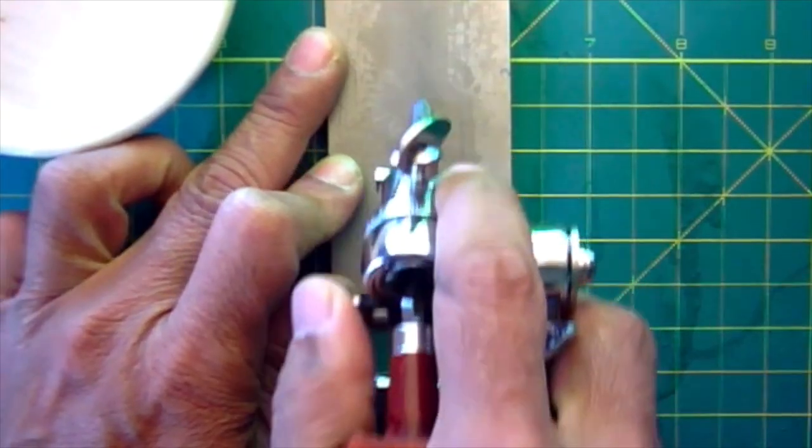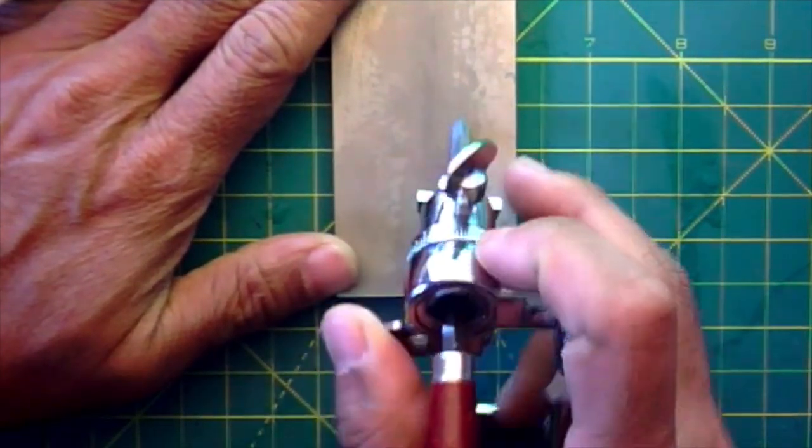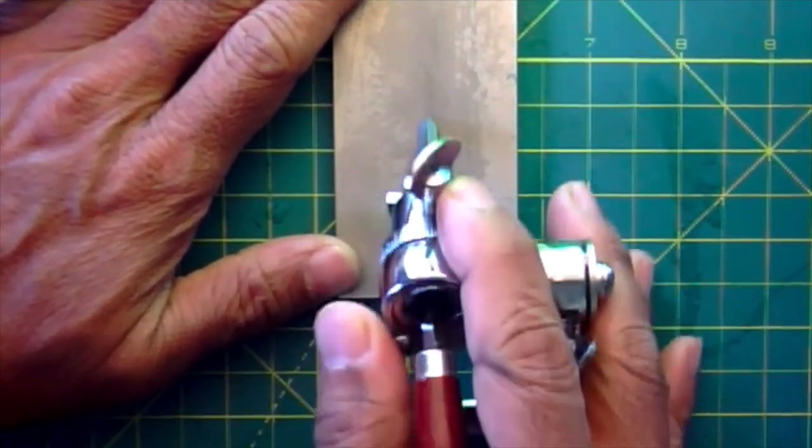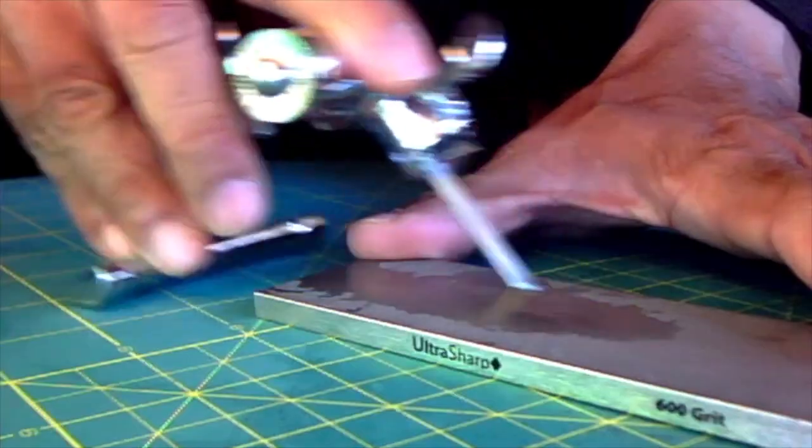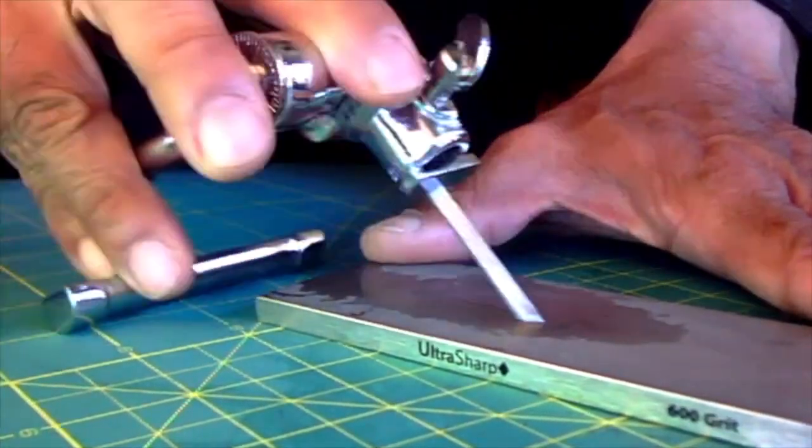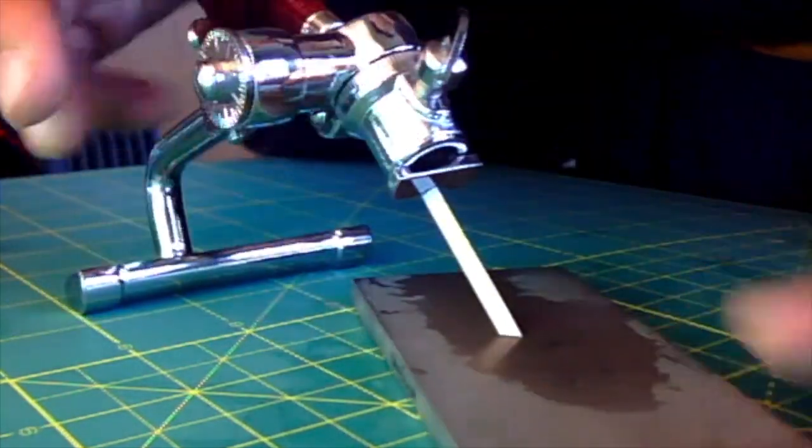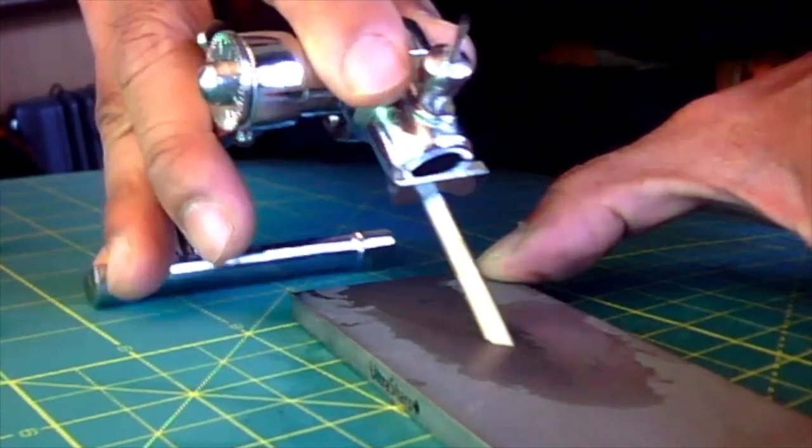That should do it. You don't have to press that hard—just maintain the same angle, lightly and gently, but repeat a number of times. Make sure you apply water to lubricate it. Check out the surface—you can see the reflection. Maintaining that angle is very important.